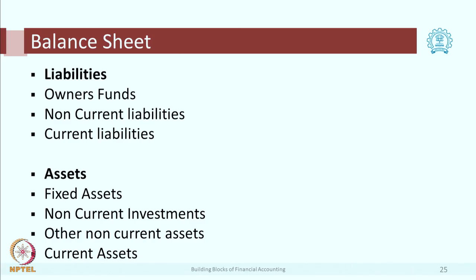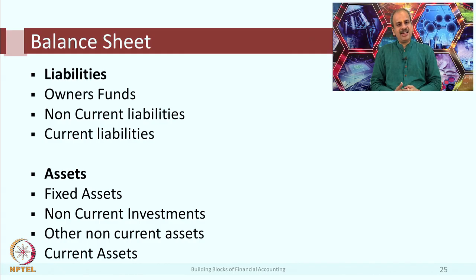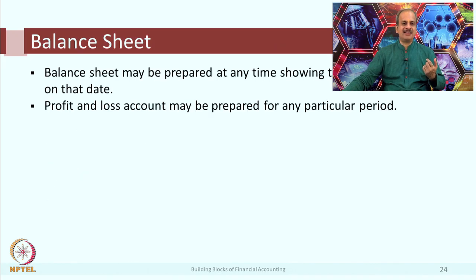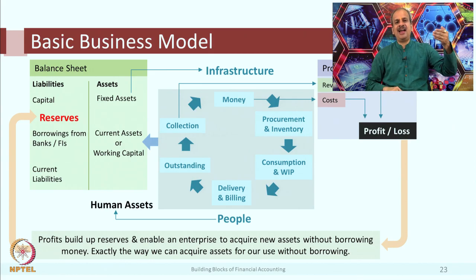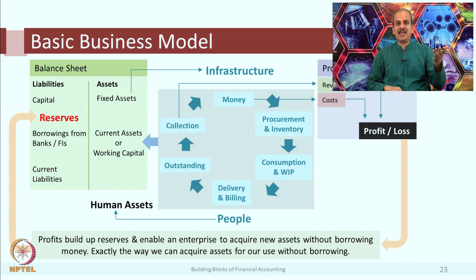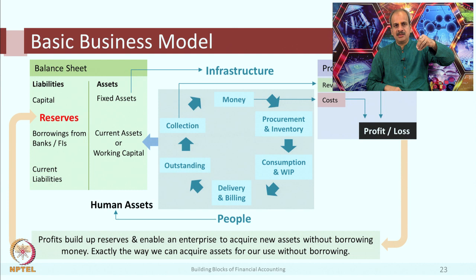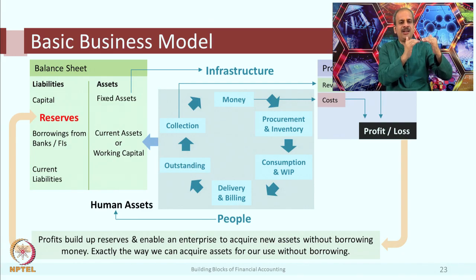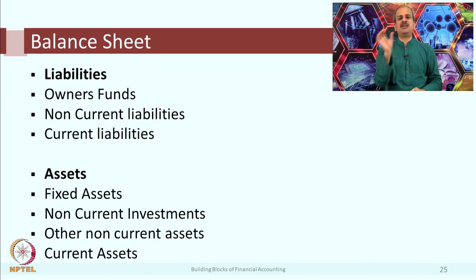This once again summarizes the items in the balance sheet. On the liabilities side, the first item is owner's fund. If we go back, we had earlier put capital, and the second item was reserves. These two items taken together — capital plus reserves — are known as owner's fund. Capital is the money which owners put in, while reserves are the profits generated by the business and given back to owners.